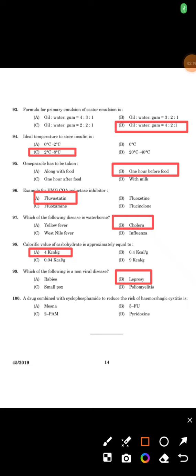A drug combined with cyclophosphamide to reduce the risk of hemorrhagic cystitis? That is option A, Mesna. In the same question paper this question is repeated. This is all about this question paper 45 bar 2019. I will start with another question paper. Thank you.